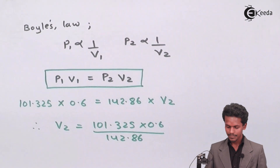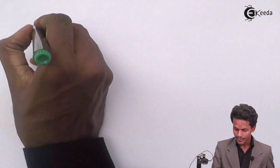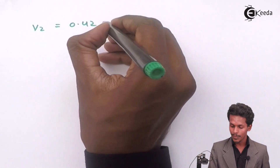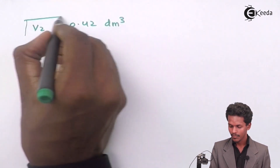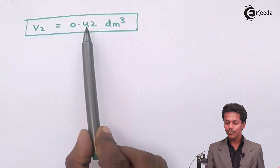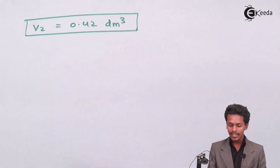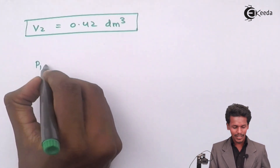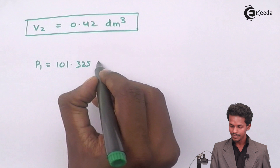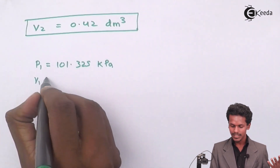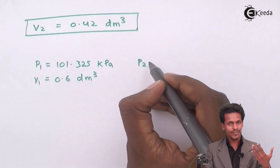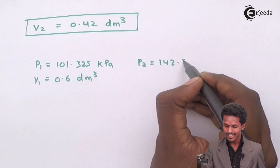We have got the answer: V2 is approximately 0.42 dm³. So the initial conditions were: pressure P1 = 101.325 kPa and volume V1 = 0.6 dm³. After the pressure is increased to P2 = 142.86 kPa, the new volume V2 = 0.42 dm³.